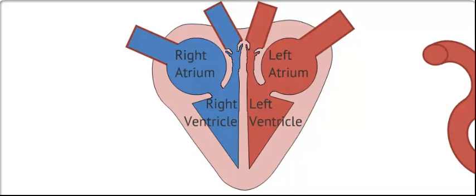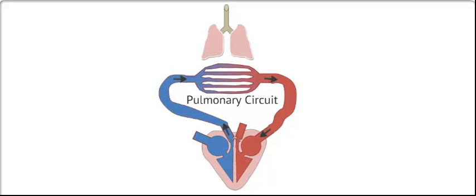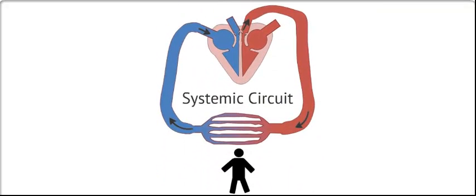The names of these circuits are the pulmonary circuit, which is carrying blood from the heart to the lungs and then back to the heart again, and the systemic circuit, which carries blood from the heart to the rest of the body and back to the heart again.